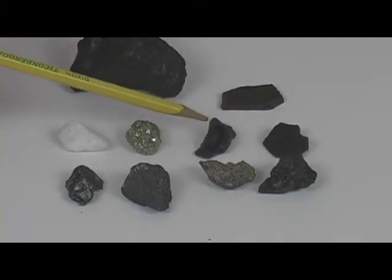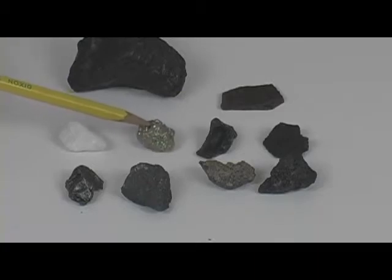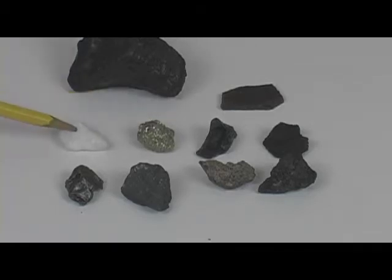And this one here is called tektite. You've probably seen the sparkly gold one before. This is what we wish meteorites looked like, but they don't. This is fool's gold, otherwise known as pyrite. And this sample is marble.